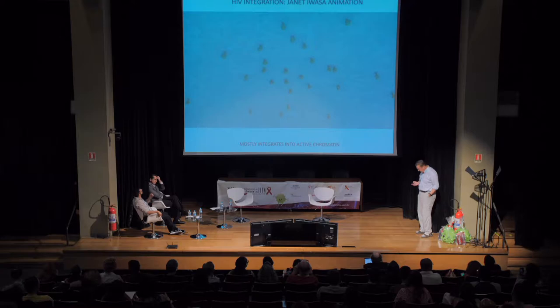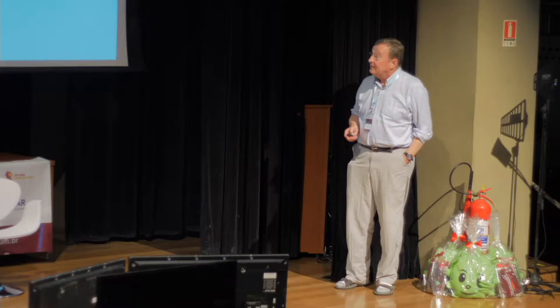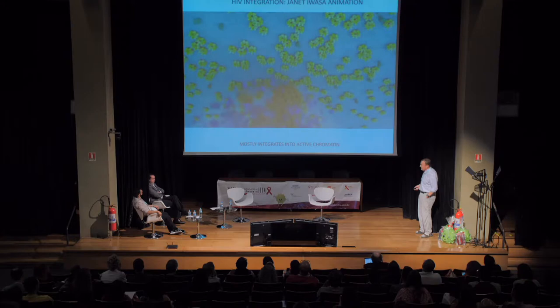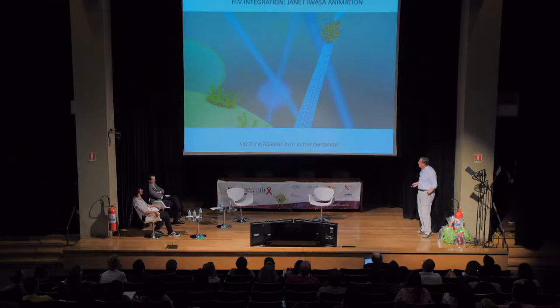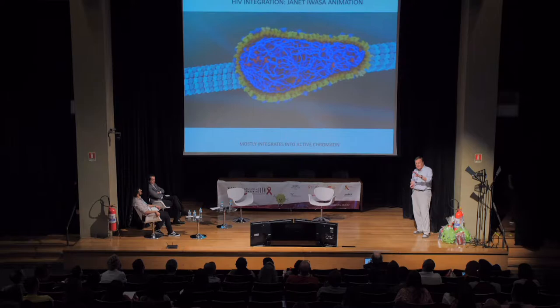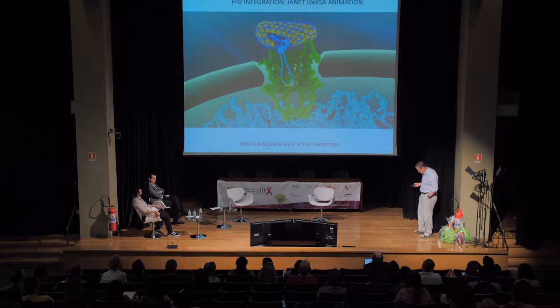HIV obviously infects activated cells. This is a beautiful illustration from Janet Ivasa, presented at CROI, showing how the virus actually goes from the cell membrane into the nucleus where it integrates. The virus integrates mostly into active genes — in other words, into areas of relatively open chromatin. This is reverse transcription: the DNA is pushed into the cell and then integrates into the host genome.